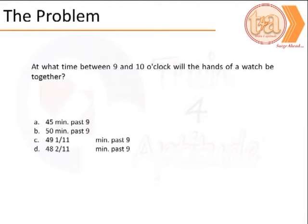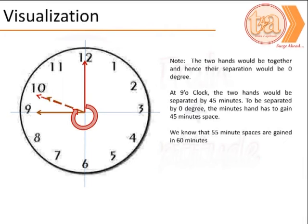We have options from which we need to choose the right answer. When visualizing the problem, we find that the hour hand is between 9 and 10, and the minute hand at 9 o'clock is at 12 and has to cover more than 45 minutes to actually coincide with the hour hand. The degree of separation at 9 o'clock is 45 minute spaces, and this is what it has to gain to match the position of the hour hand.